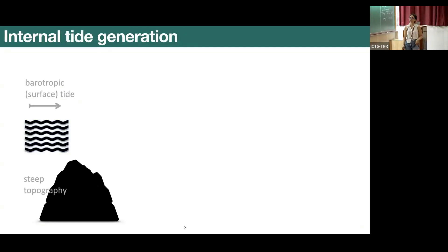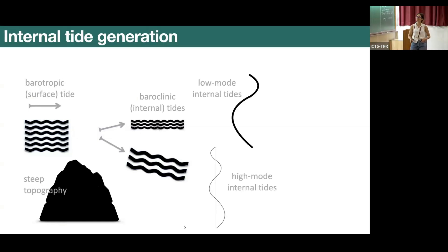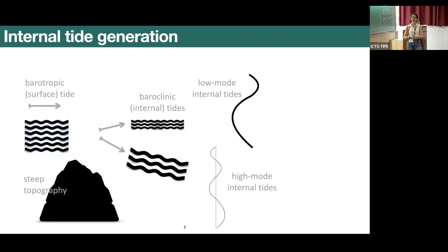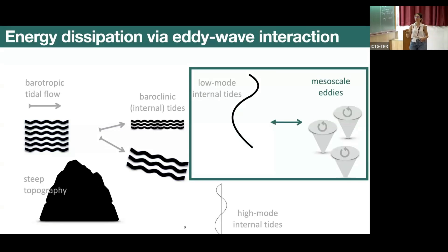Here we have a simplified sketch of how this interaction might take place. We have steep topography at the bottom of the ocean and the barotropic surface tide flowing over it, which generates the baroclinic or internal tides. Low modes have long structures and propagate far away; higher modes are more unstable, have smaller horizontal scales, and can break and dissipate energy close to the topography. This is why we focus mostly on the low modes and how they interact with mesoscale eddies, which have similar horizontal scales.